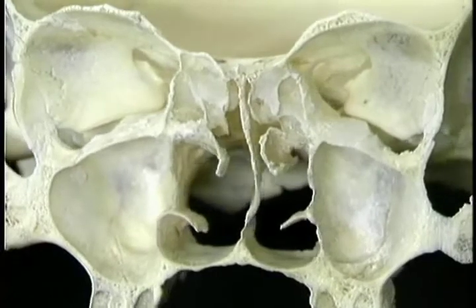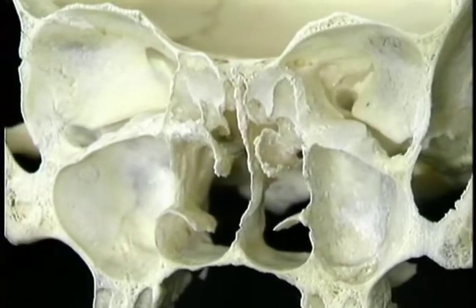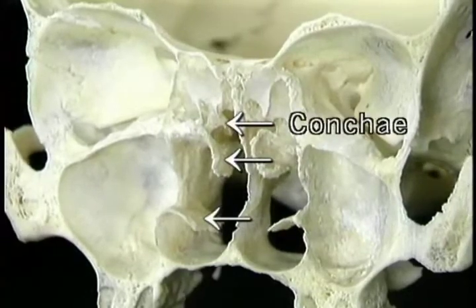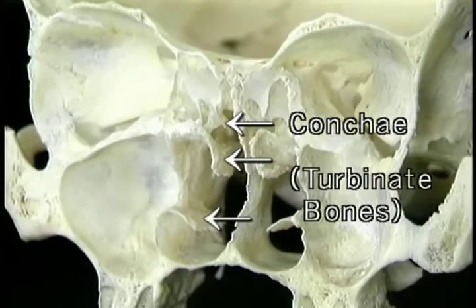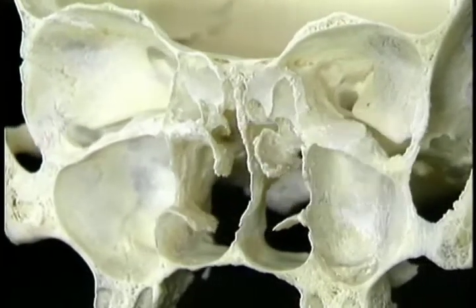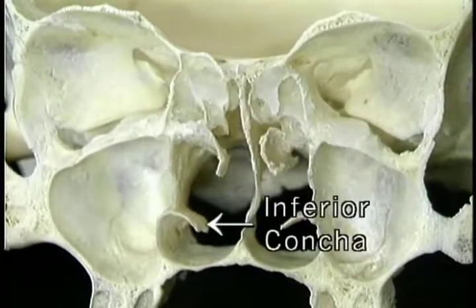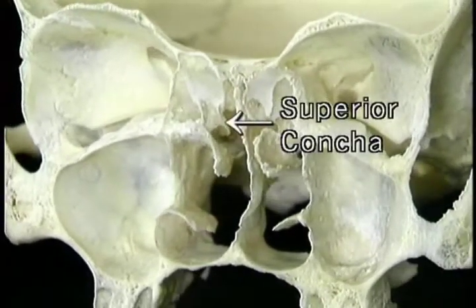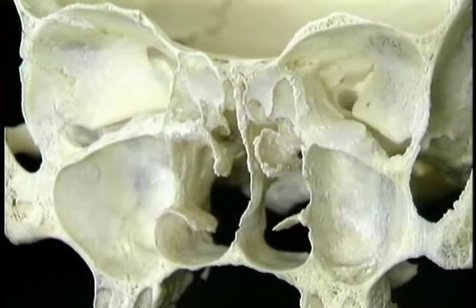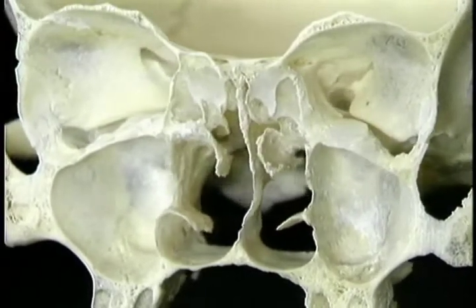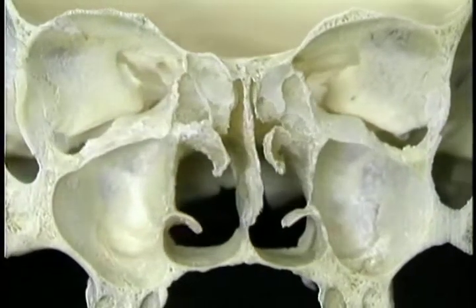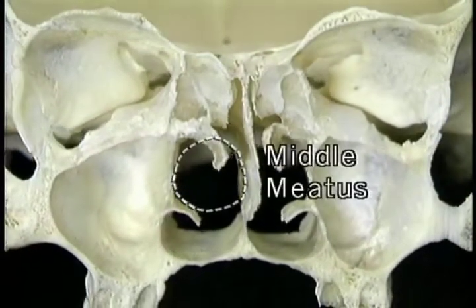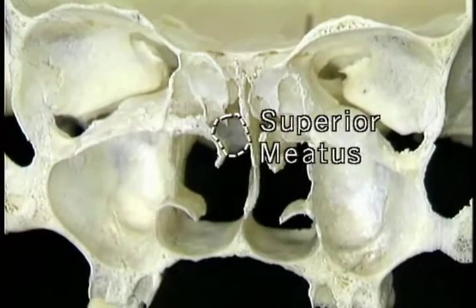By contrast, the lateral wall is marked by a number of features, most notably by three delicate bony projections, the conchae, also known as the turbinate bones: the inferior concha, the middle concha, and the much smaller superior concha. The three conchae partially divide the air passage into three parts: the inferior meatus, the middle meatus, and the superior meatus.